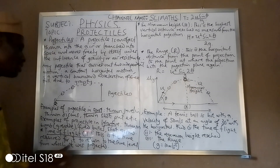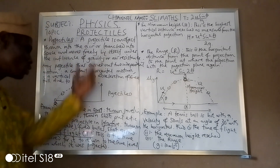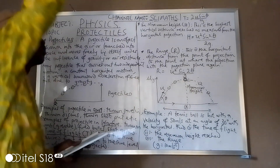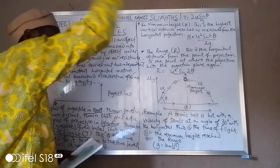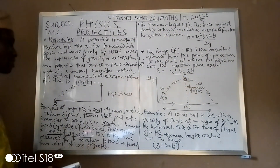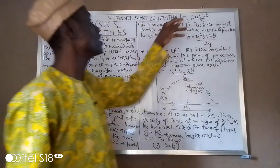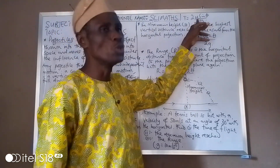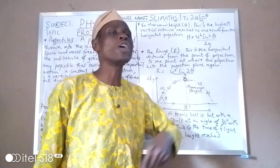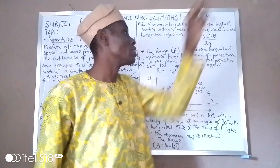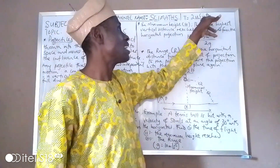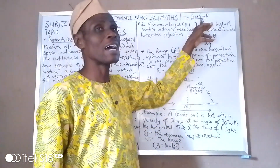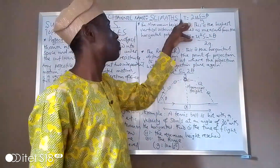The first one: time of flight. This is the time required for the object to return to the same level from which it was projected. So if you throw an object, it goes up and then comes down — the time taken for the going and coming down is called the time of flight. It has a formula: T equals 2u sin θ over g, where u is the initial velocity, θ is the angle of projection, and g is acceleration due to gravity.